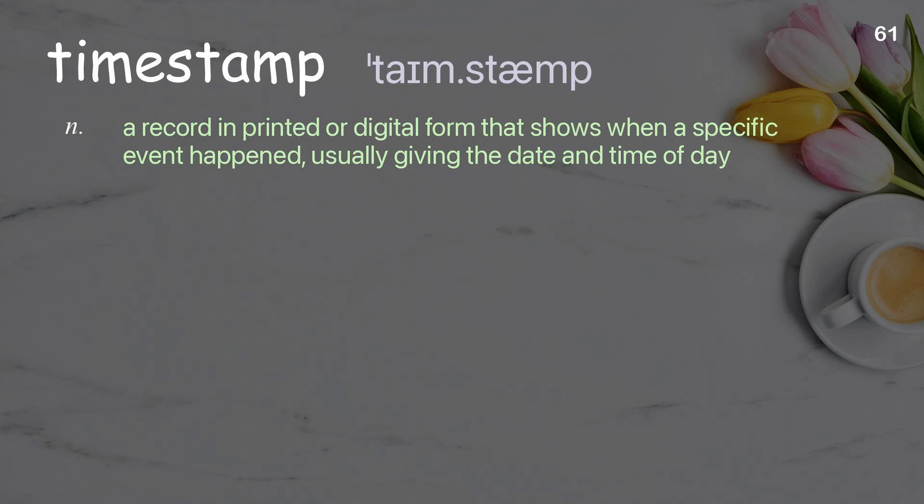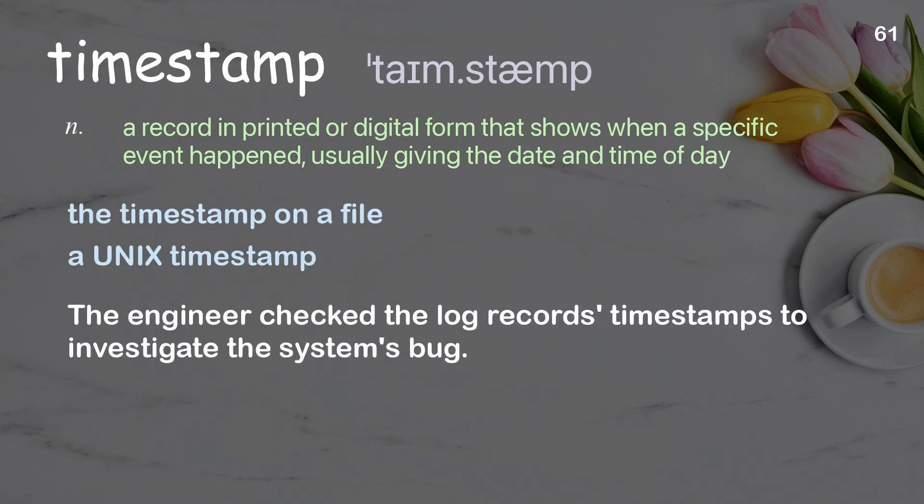Timestamp: A record in printed or digital form that shows when a specific event happened, usually giving the date and time of day. Examples: The timestamp on a file. A UNIX timestamp. The engineer checked the log record's timestamps to investigate the system's bug.